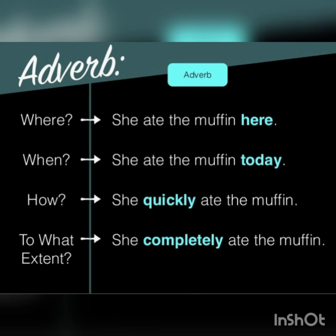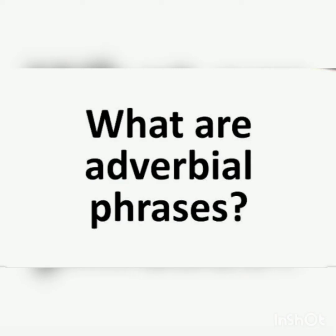An adverbial phrase, also referred to as an adverb phrase, is a multi-word phrase that takes the role of an adverb in a sentence. Just like adverbs, adverbial phrases modify other words by describing when, where, why, or how something was done. They can also explain the condition of an object or action, or the extent to which an action or object was affected.